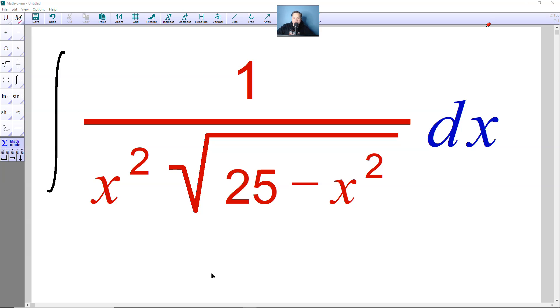Welcome friends, in this one let's take a look at finding the anti-derivative of 1 over x squared multiplied by the square root of 25 minus x squared.